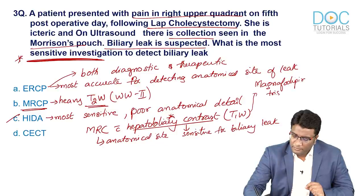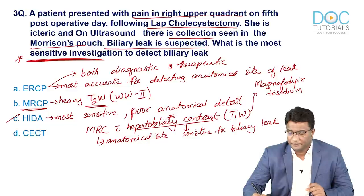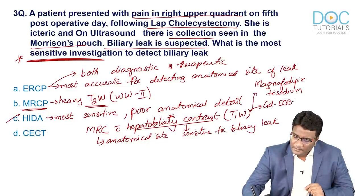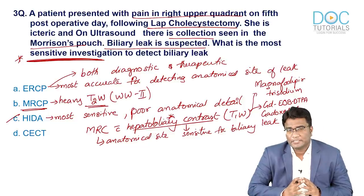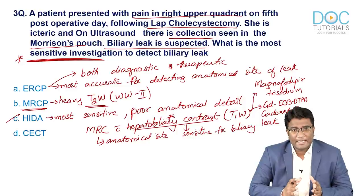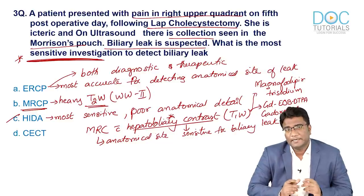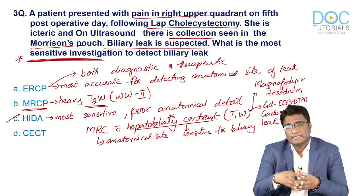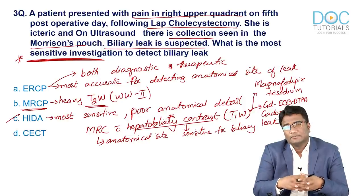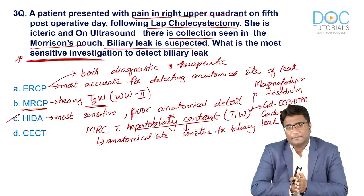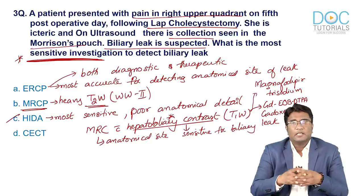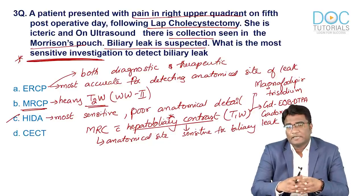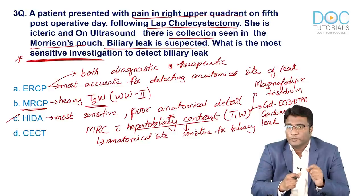Hepatobiliary contrast agents include mangafodipir trisodium, gadolinium EOB-DTPA, and gadoxetate. MR cholangiography with hepatobiliary contrast is a newer and better technique that non-invasively tells us the site of leak and confirms it is biliary. The key summary: most sensitive — HIDA scan; most accurate for anatomical site — ERCP; newer non-invasive technique for both site and confirmation — MR cholangiography with hepatobiliary contrast. Traditional MRCP alone is not useful for biliary leak.